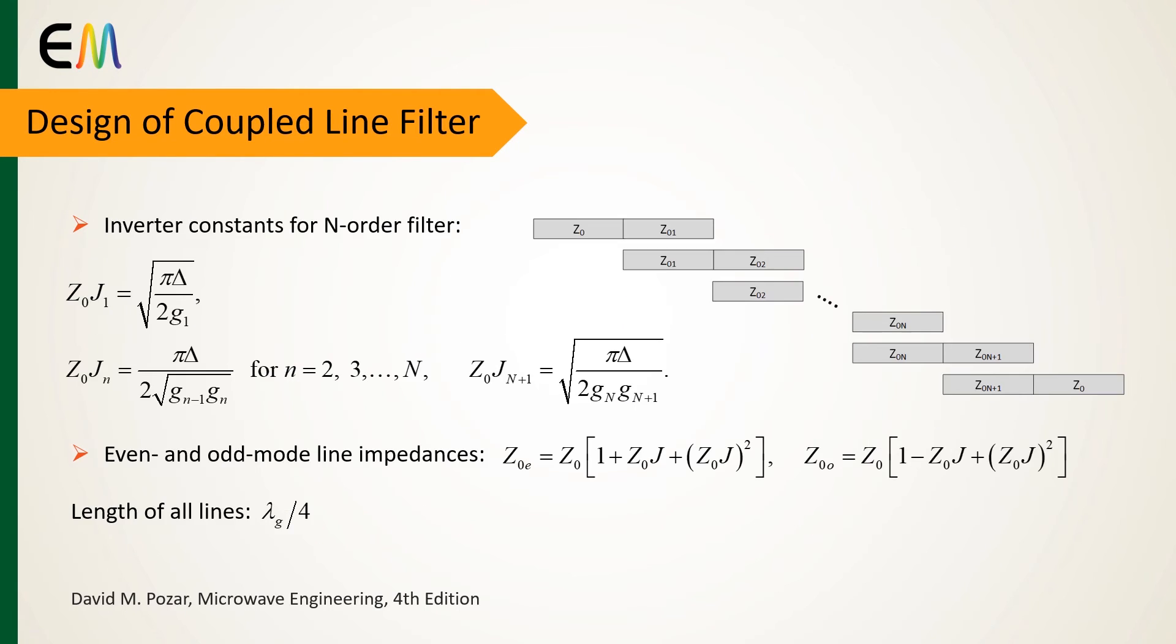The last step of design is to calculate the multi-section coupled lines parameters. The inverter constants of each coupled line is obtained as these equations for n equals 1 to n plus 1.